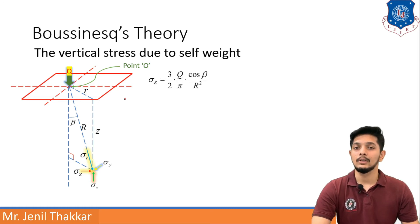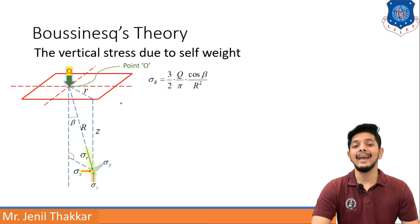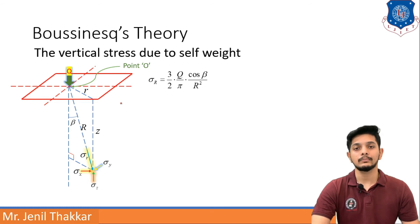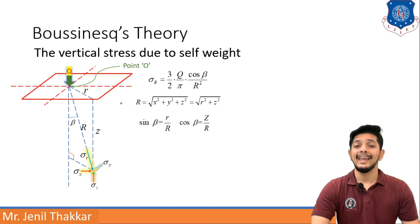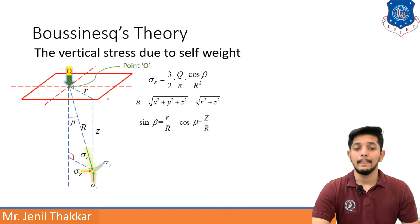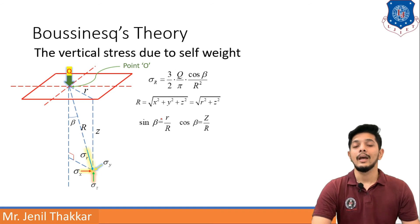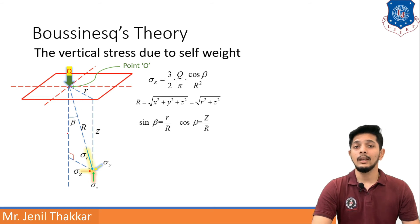Boussinesq gave the equation of vertical stress sigma z as (3/2) × (q/π) × cos(β) / R², where capital R equals the square root of x² + y² + z². We can also take capital R as the square root of r² + z². Sine of angle beta can be written as small r upon capital R, and cosine of angle beta can be written as z upon capital R.